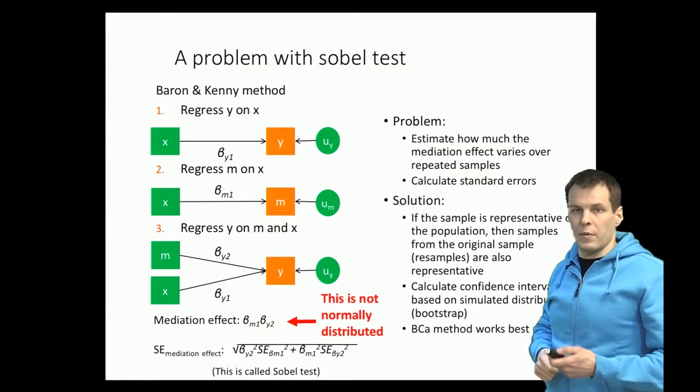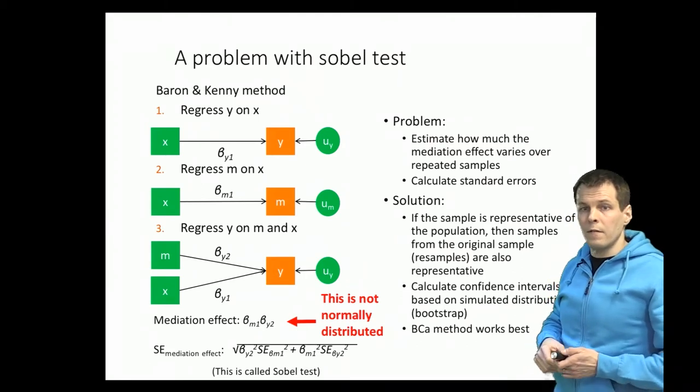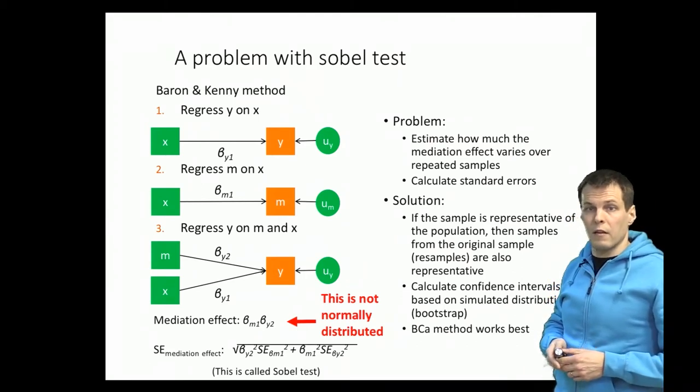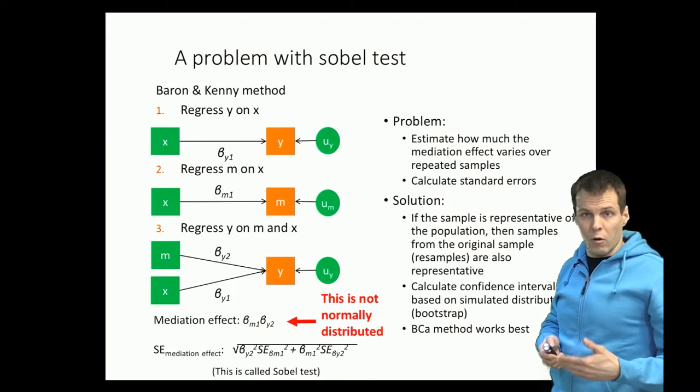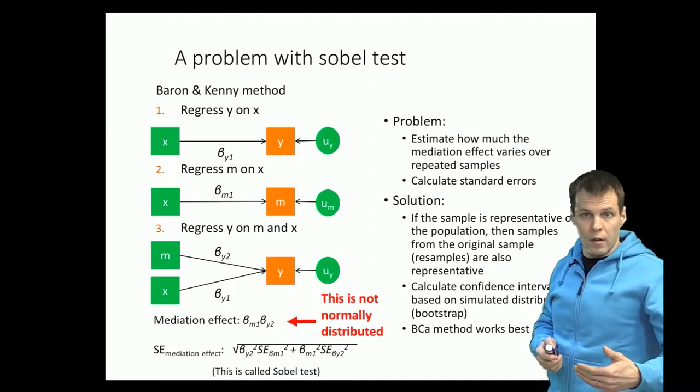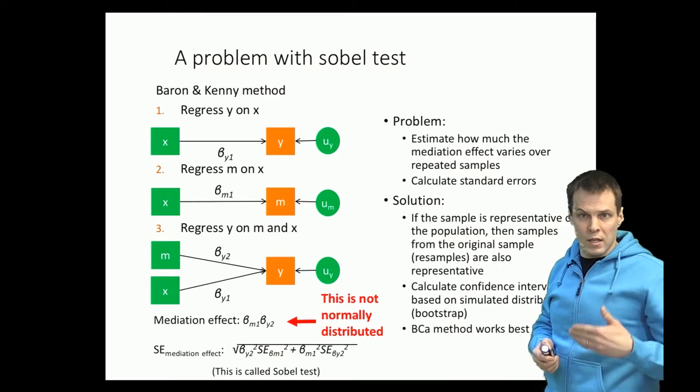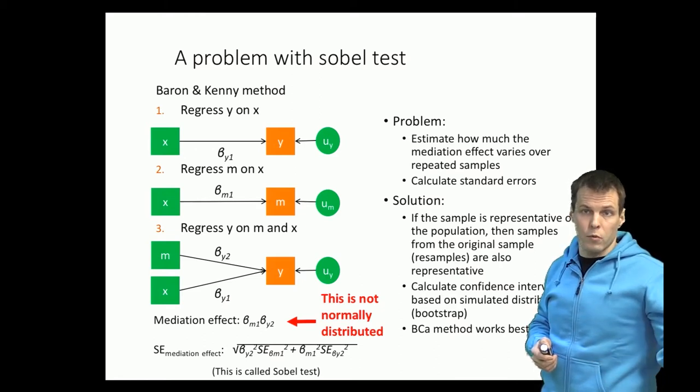So the idea of bootstrapping is that if the sample is representative of the population, then taking samples from our original sample forms a process that is representative of taking samples from the actual population.